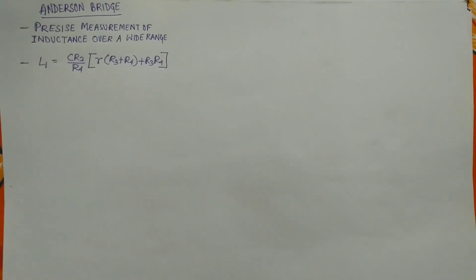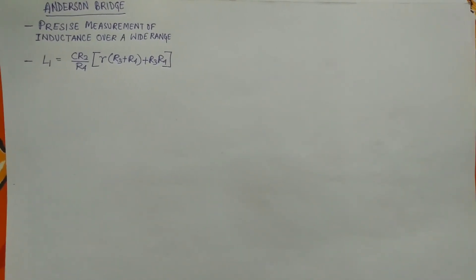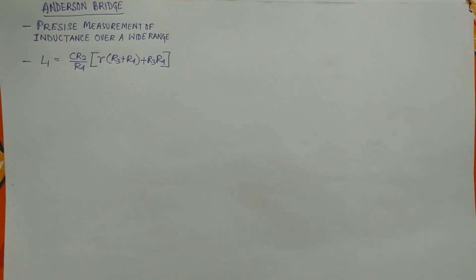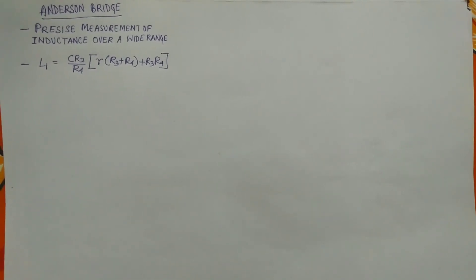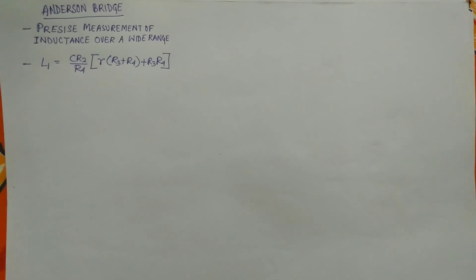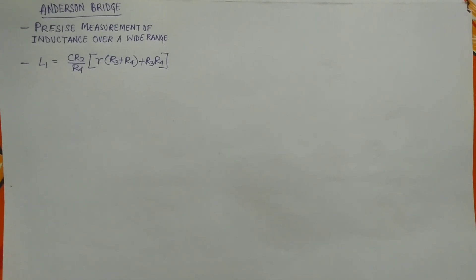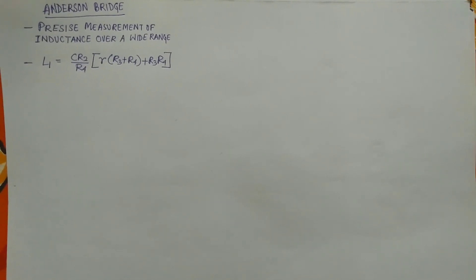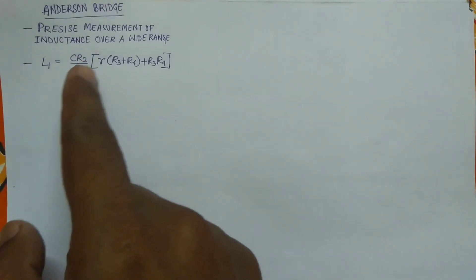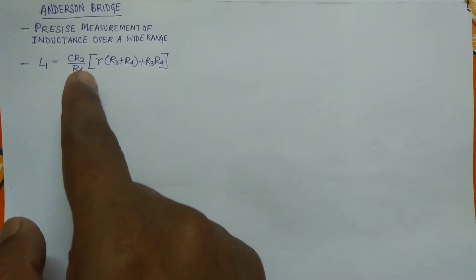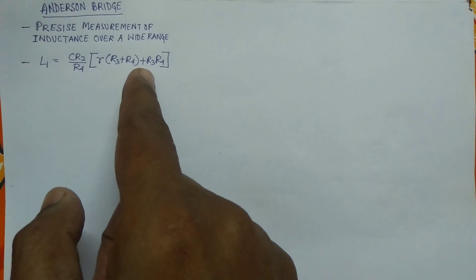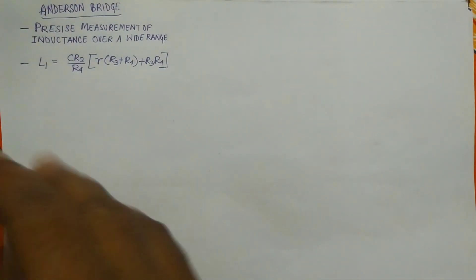Today I am going to show you how to draw the phasor diagram of the Anderson bridge. The Anderson bridge is used for the precise measurement of inductance over a wide range, and the equation is: L1 equals C times R2 times (R times R3 plus R4 times R3 plus R3 times R4).